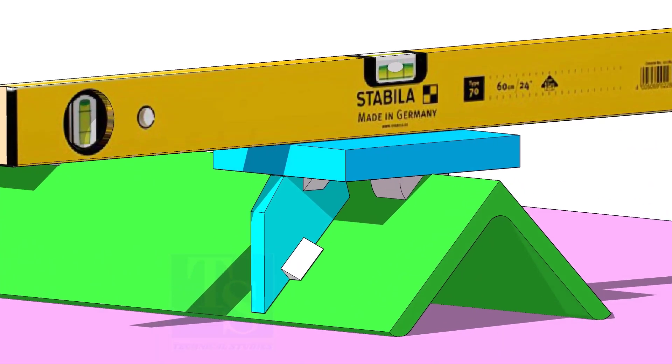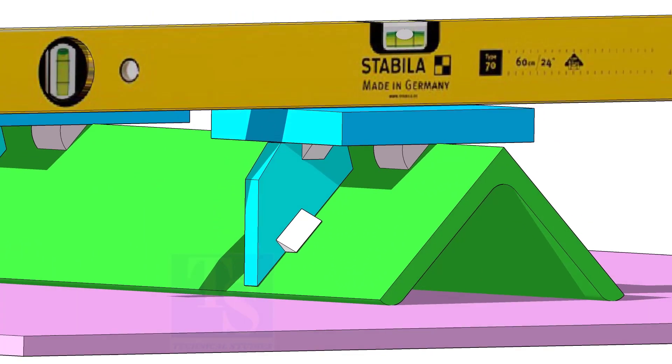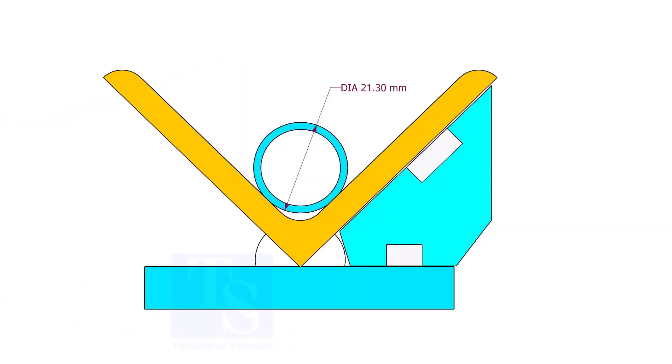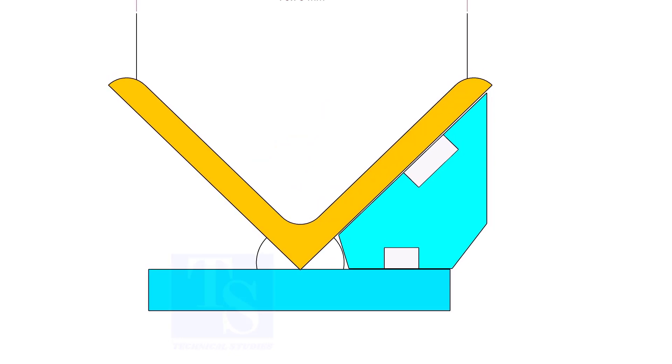If required, add rib plates on both sides of the angle bar. In this angle jig, you can fit up any small size pipes.